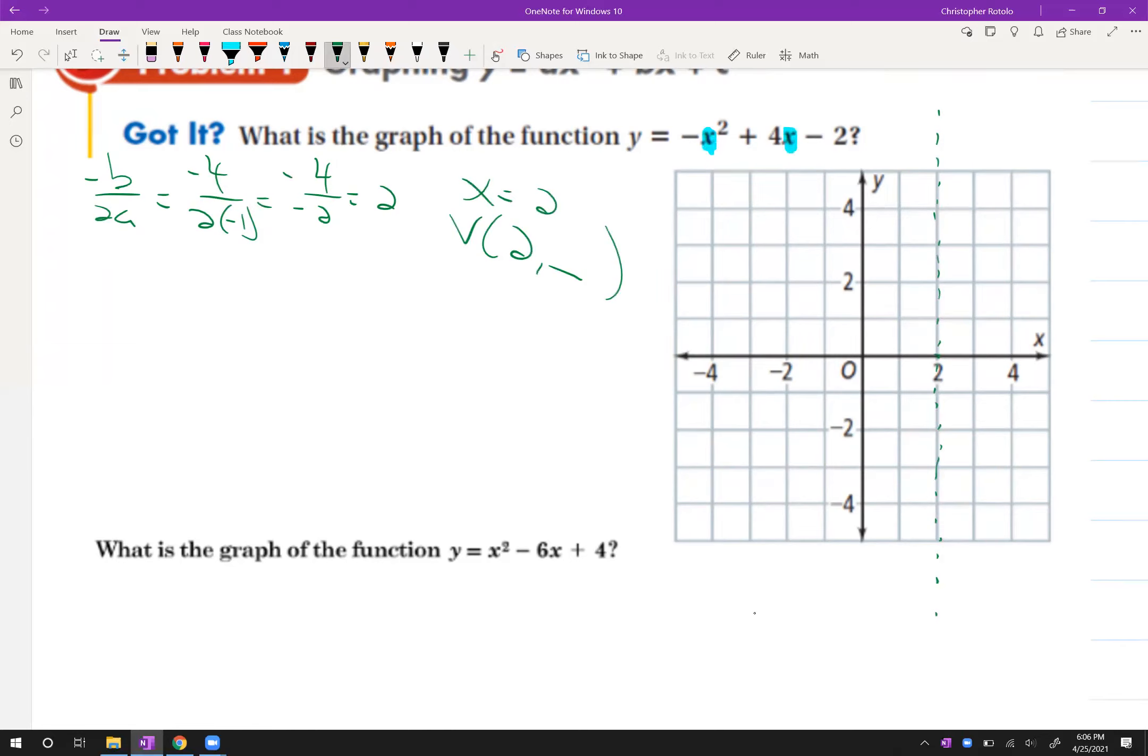What I do with that 2 now is I plug it in at all of my X's, and that way I can find out the other half of that ordered pair. So be careful with this one. Negative 2 squared plus 4 times 2 minus 2. 2 squared is 4 times negative is negative 4 plus 8 minus 2.